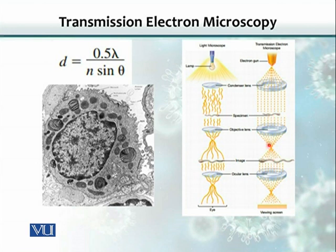Because this is an electron microscope, we cannot see the electrons with our eyes — we need a phosphorous screen, like a TV screen. The image is created on the screen by the bombardment of these electrons. The advantage is that the image is much, much bigger — we can resolve very small structures and see them in detail.